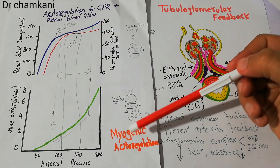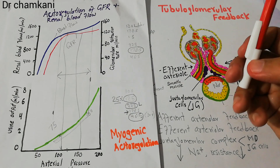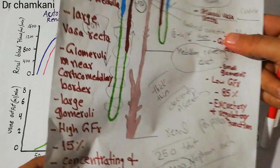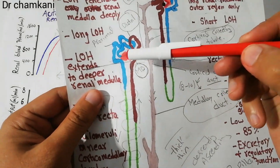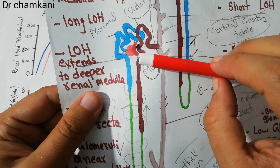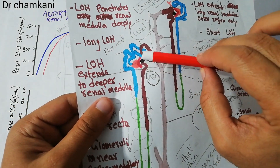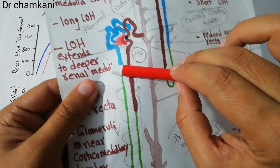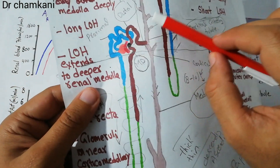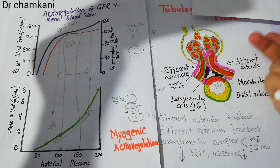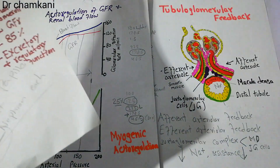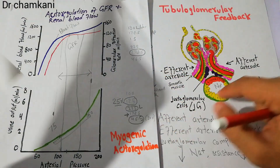The myogenic mechanism of autoregulation is very simple. The nephron takes blood through the afferent and efferent arterioles, filtration occurs in the glomerular capillaries, and filtrate moves through the proximal tubule, loop of Henle, and distal tubule for urine formation. When we enlarge this area, we see the distal tubule, glomerulus, and the afferent and efferent arterioles.